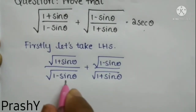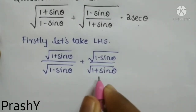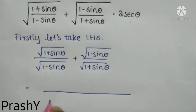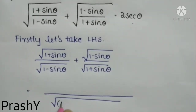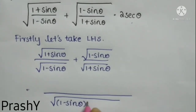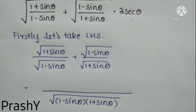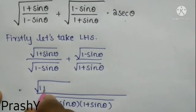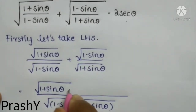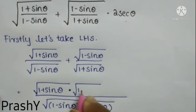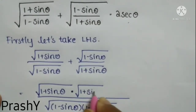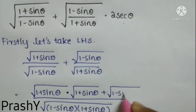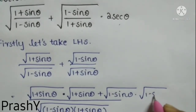Let us take LCM for the denominators: root over (1 − sin θ) and root over (1 + sin θ). So we get root over (1 − sin θ) into (1 + sin θ) in the denominator. In the numerator we get root over (1 + sin θ) plus root over (1 − sin θ) into root over (1 − sin θ).